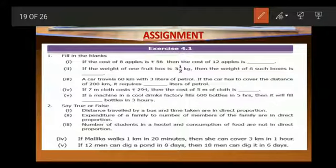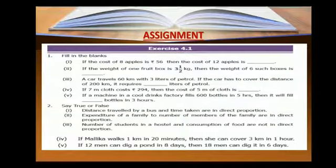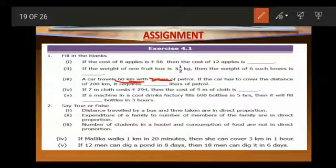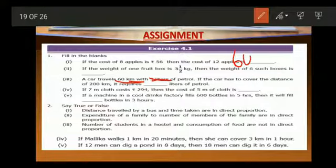See the third one. A car travels 60 km with 3 litres of petrol. If the car has to cover a distance of 200 km, it requires how many litres of petrol? Distance is compared with litres of petrol. When the distance increases, petrol consumption will also increase, so the quantities are in direct proportion. We need to find: if 60 km is covered with 3 litres, then for 200 km what will be the petrol consumption? So we have 60 by 3 is equal to 200 by X.